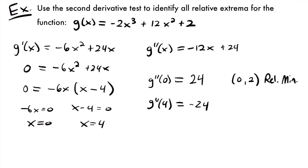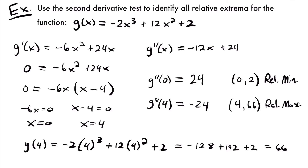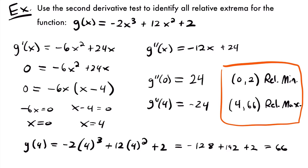For x = 4, plugging into the original function: g(4) = -2(4³) + 12(4²) + 2. 4³ = 64, so -2(64) = -128. 4² = 16, and 16 × 12 = 192. So we have -128 + 192 + 2 = 66. Our relative maximum is at (4, 66). That is the final answer — both relative extrema found using the second derivative test.